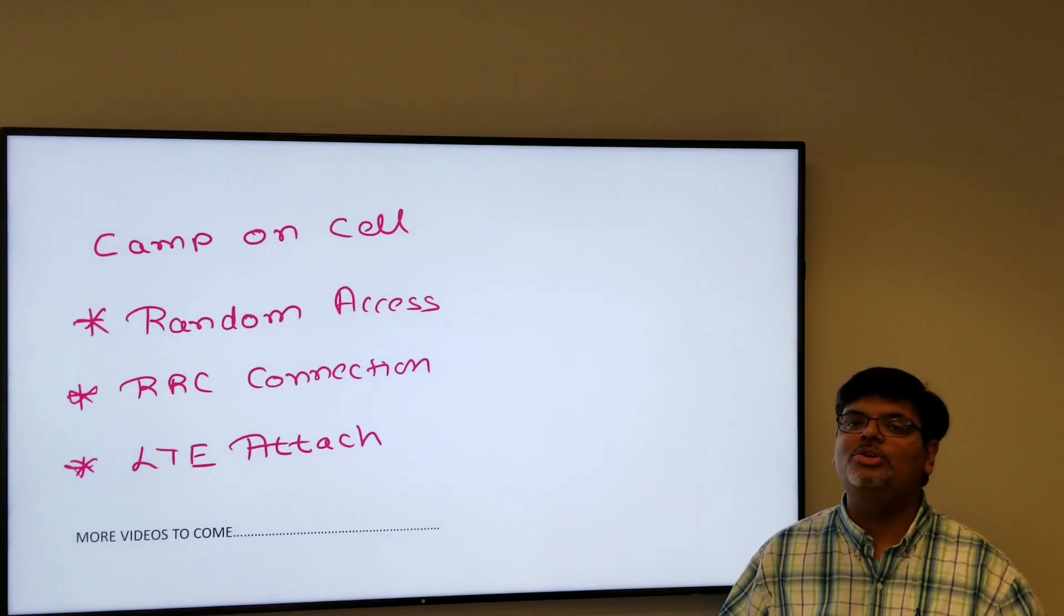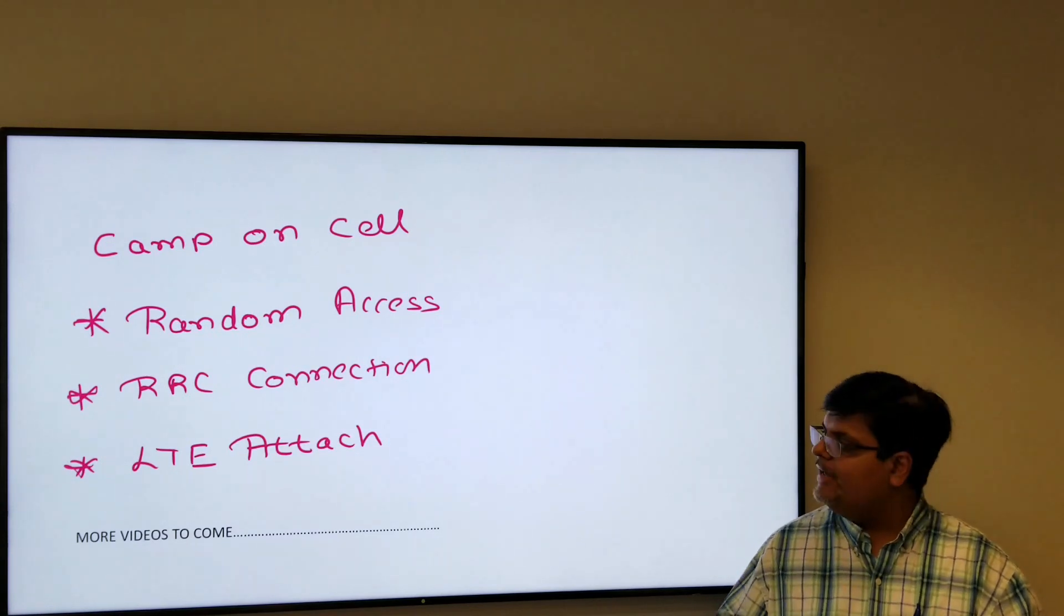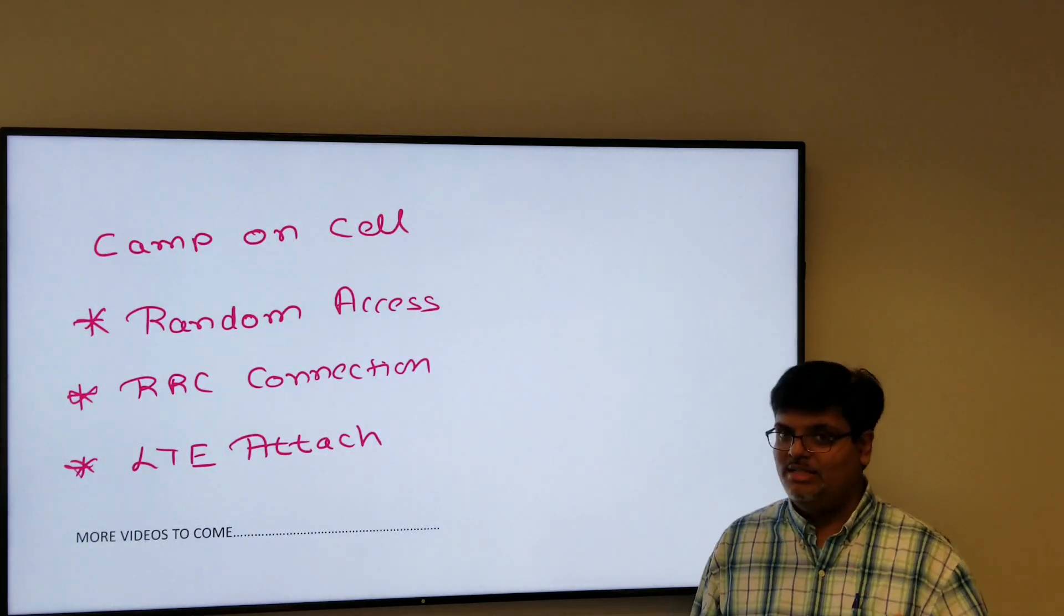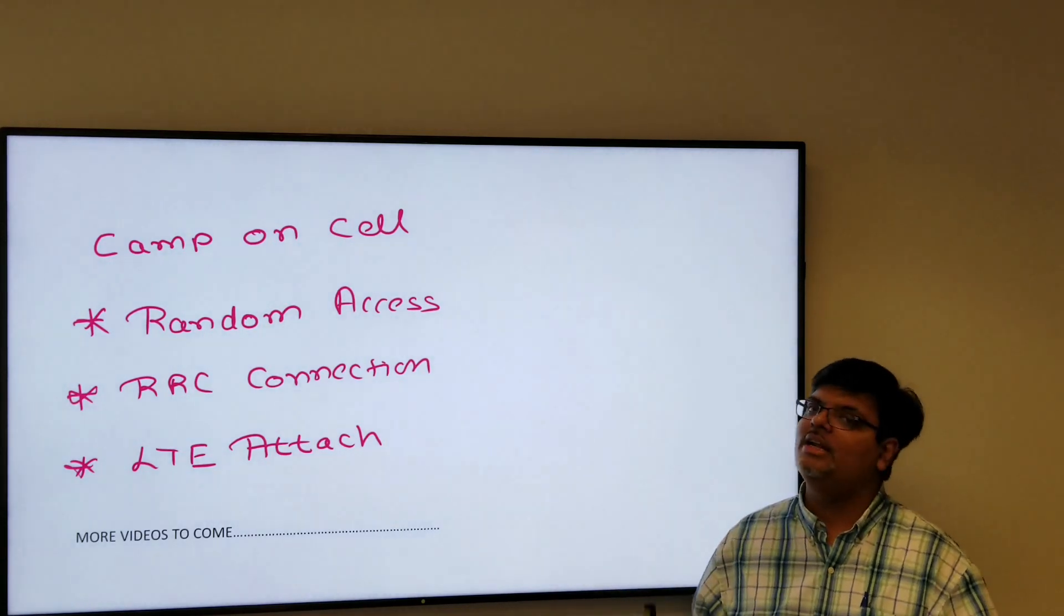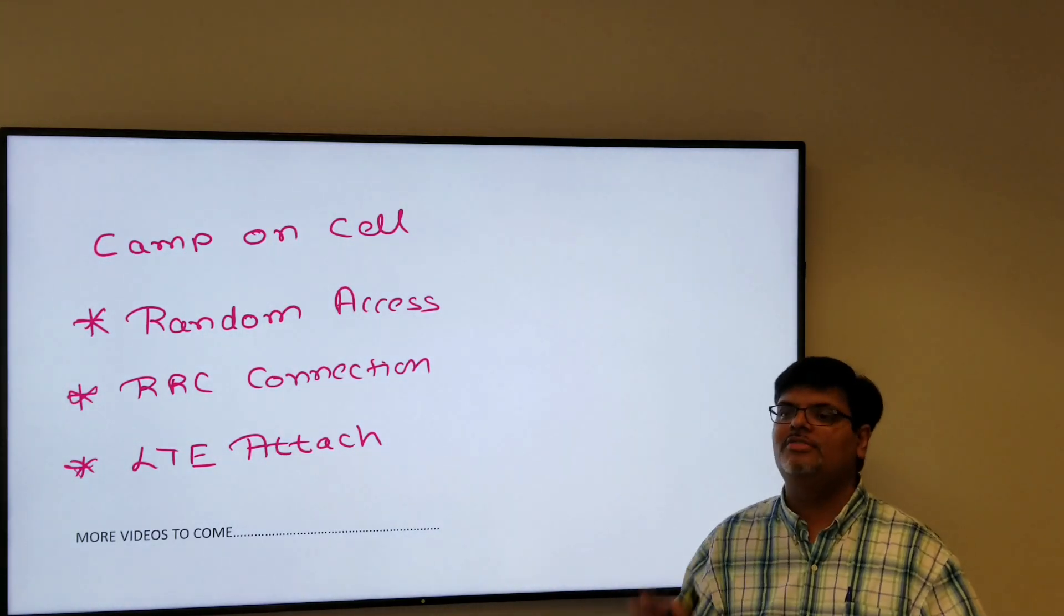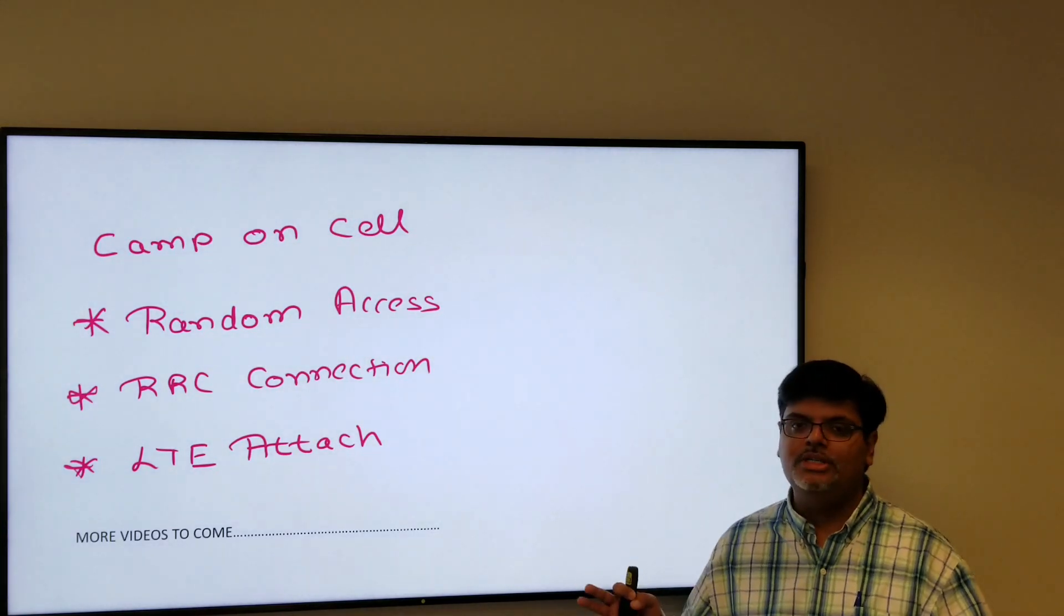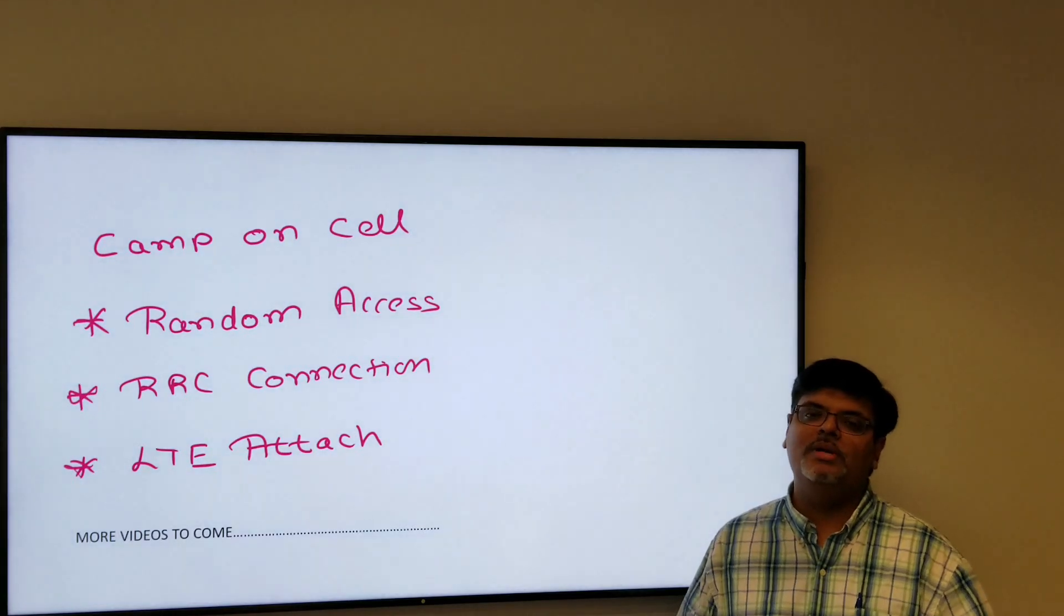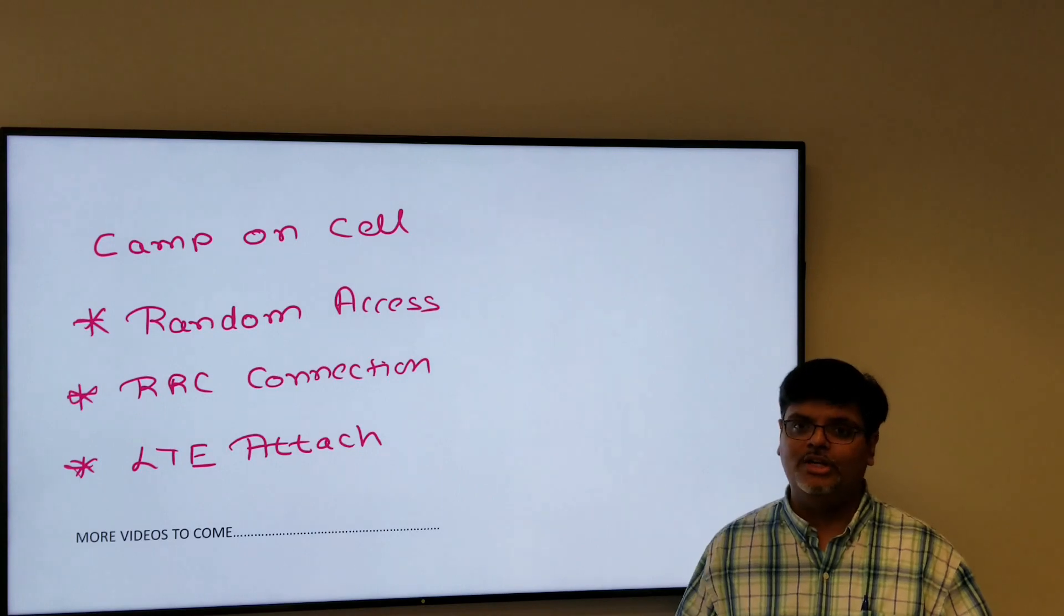Even before going to the attach, it has to first do the random access, RRC connection setup, and the LTE attach. All of them are again a detailed procedure similar way of cell search. We will focus on all these procedures in different videos. For now we know how the UE basically searches the cell, finds the suitable cell, makes sure it's a strong cell, and camps on the cell.